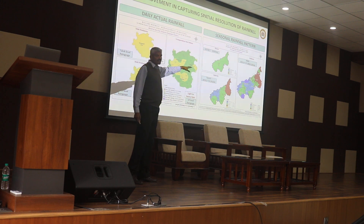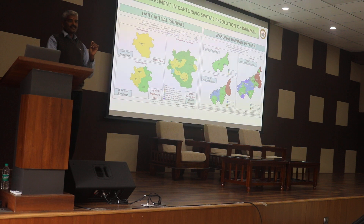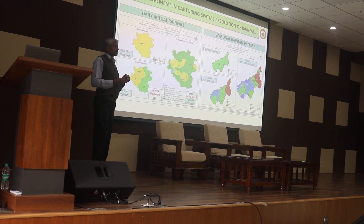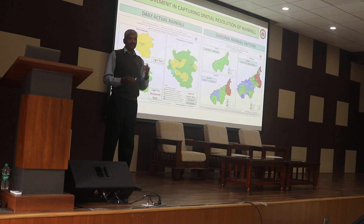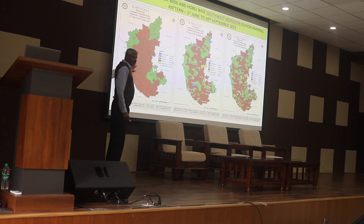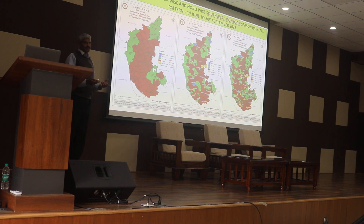The deviation from normal is a key metric. Normal rainfall is calculated based on historical data — taking a 50-year average. Suppose for the month of November there is a normal rainfall value. What is actually observed is compared to normal, and the difference is the deviation of rainfall. If deviation is above normal, it is called excess; if below normal, it is called deficient rainfall. We provide this information at district, taluka, hobli, and Gram Panchayat levels.